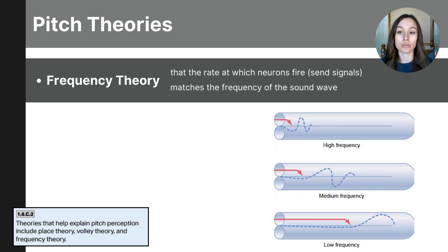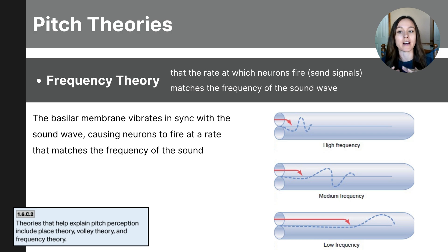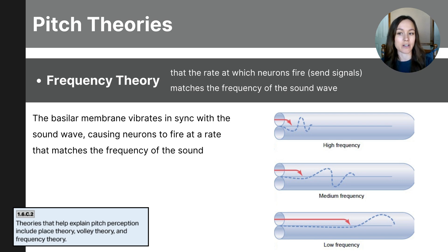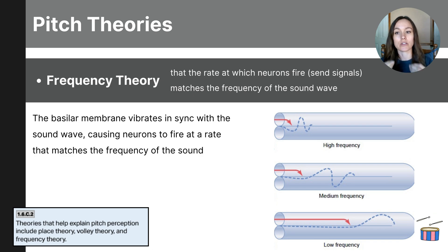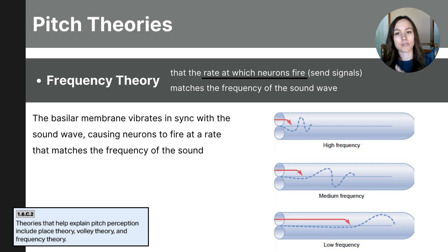The frequency theory proposes that the rate at which a neuron fires its signals matches the frequency of the sound wave. For low-frequency sounds, the entire basilar membrane vibrates in sync with the sound wave, causing the neurons to fire at a rate that matches the frequency of the sound. For example, if a sound wave has a frequency of 200 hertz, the auditory nerve fibers would fire 200 times per second. Think of neurons in your ear like drummers — when a low-pitch sound comes in, the neurons beat slowly; when a high-pitch sound comes in, they beat quickly. The brain counts these beats and figures out the pitch based on the speed of firing. In summary, the rate of neural firing matches the frequency of the sound wave, and this is how the brain interprets pitch.